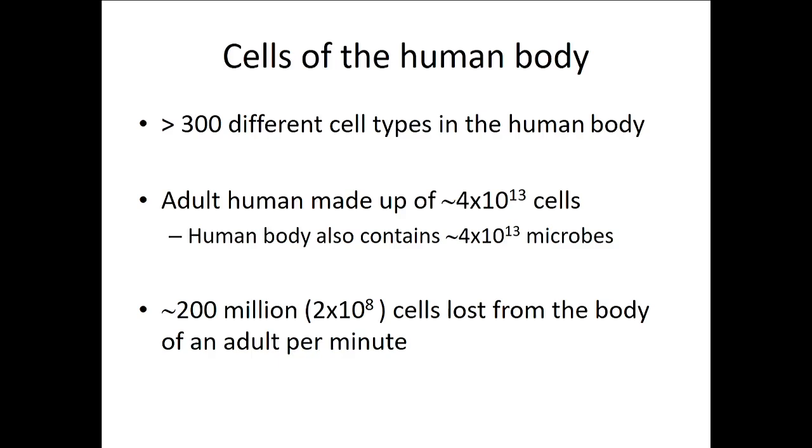Right, so the very remarkable thing about this whole process is that 200 million cells are lost from our bodies every single minute. Okay, so all of these cells that we have in our bodies turn over at a constant rate. In fact, it is said that every atom in our body, every atom is replaced in a seven-year period.